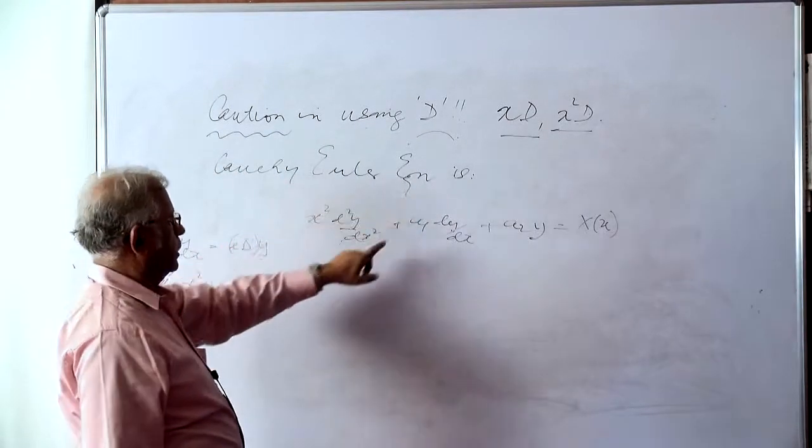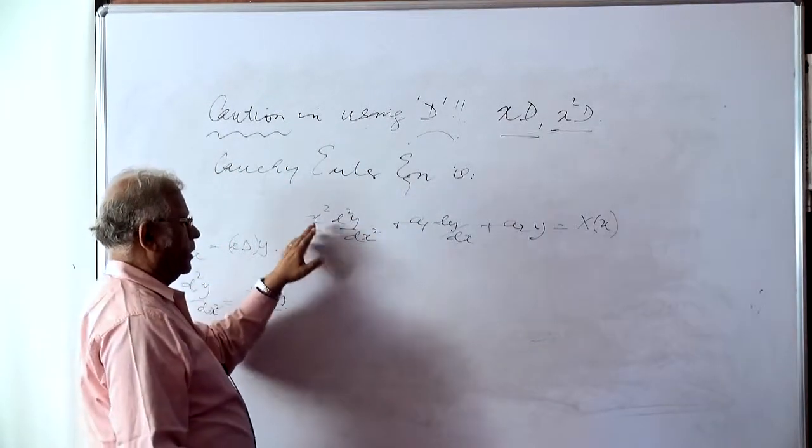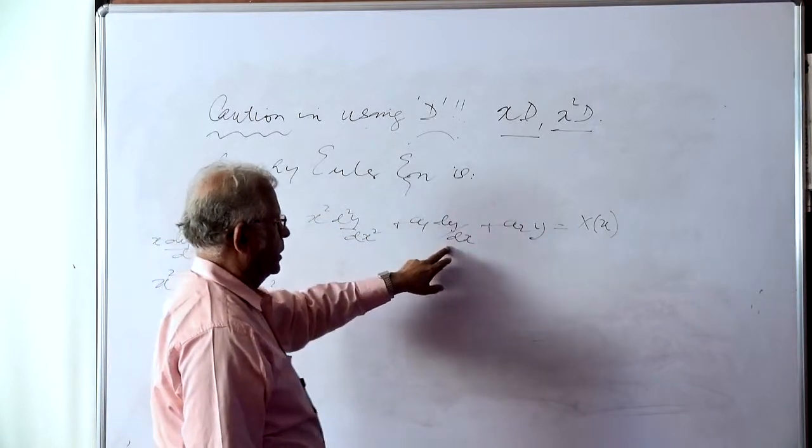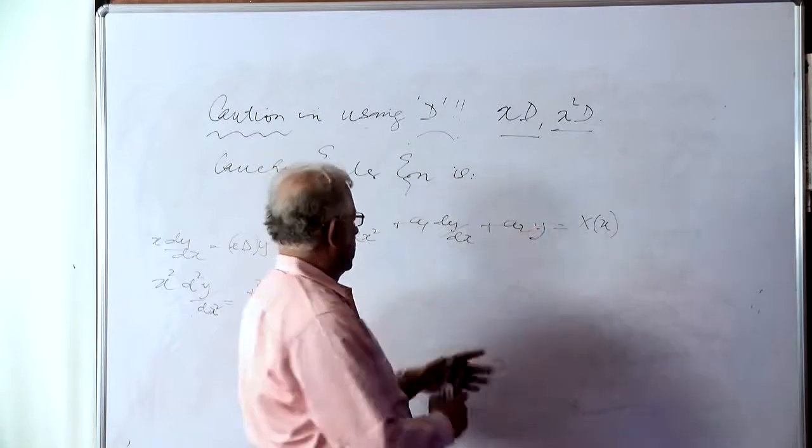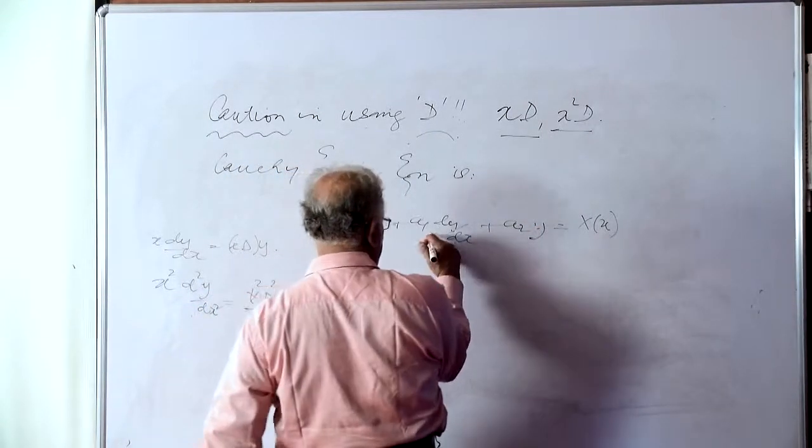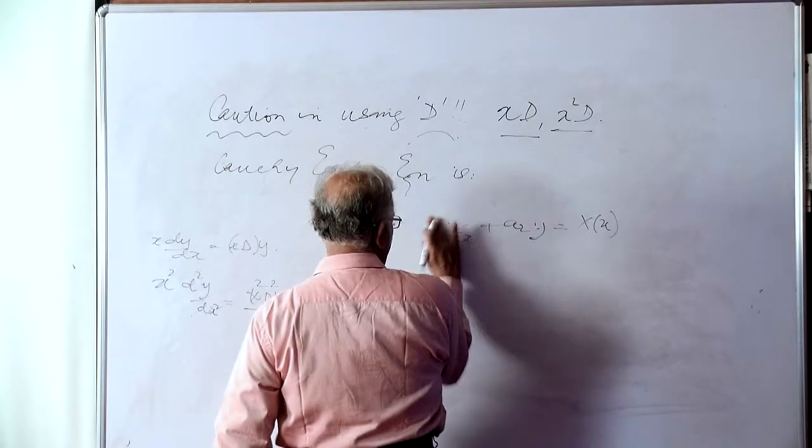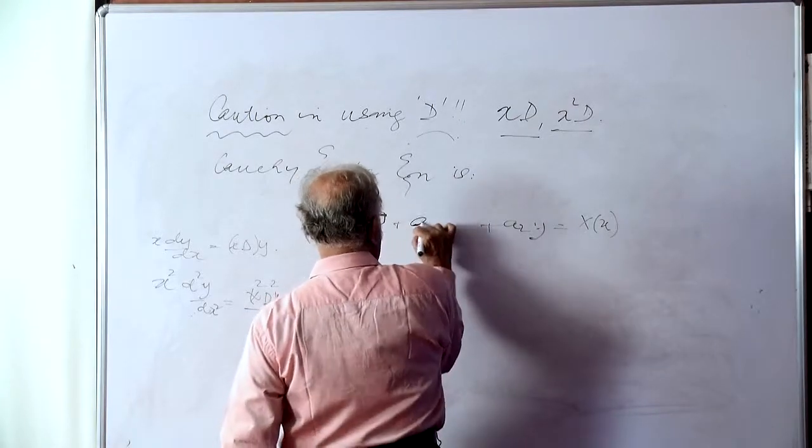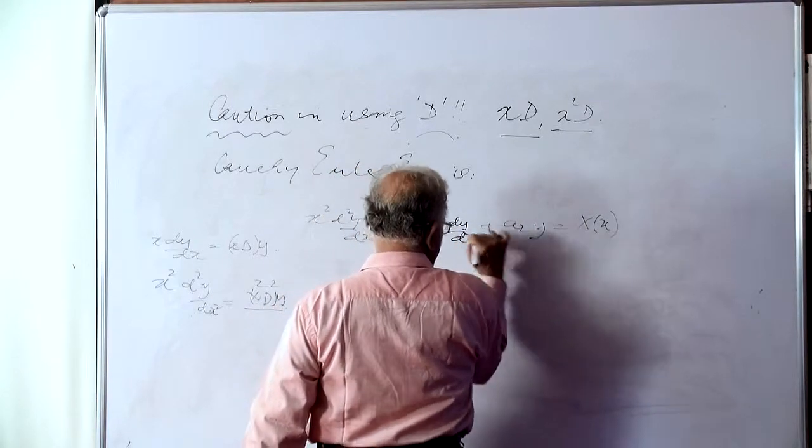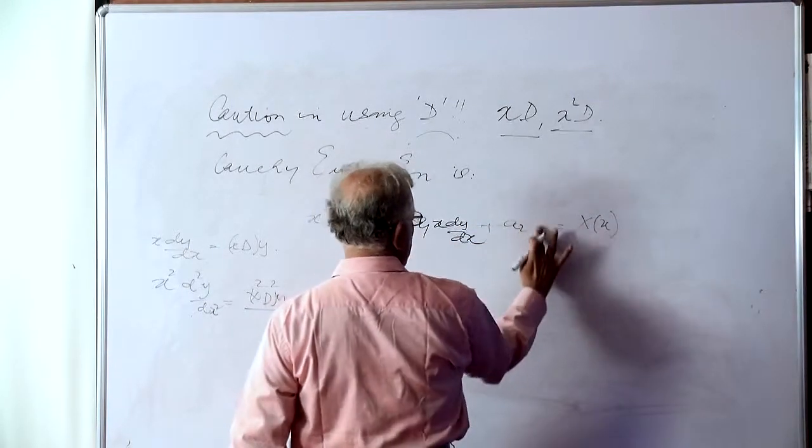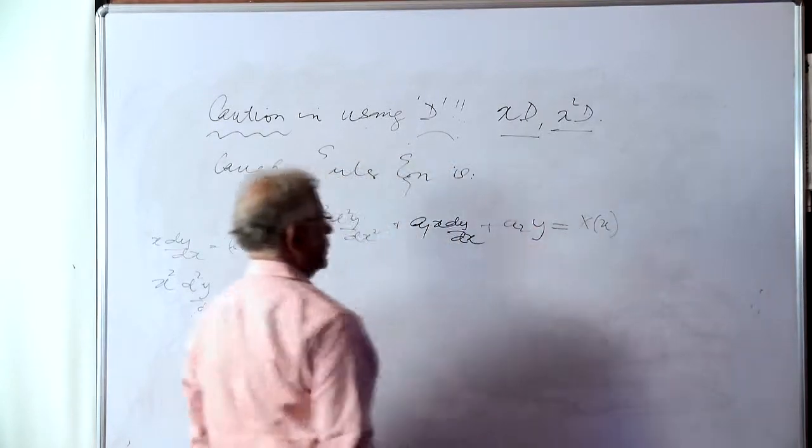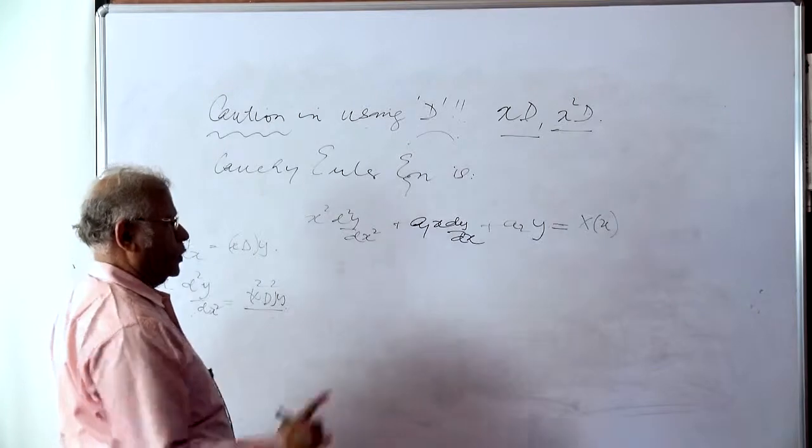The Cauchy-Euler equation is written down as x squared d²y/dx² plus a₁x dy/dx plus a₂y is equal to a function of x, capital X of small x.